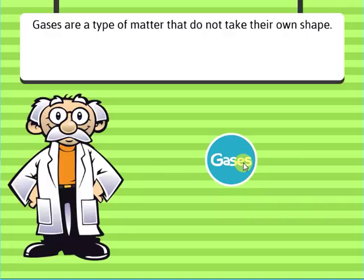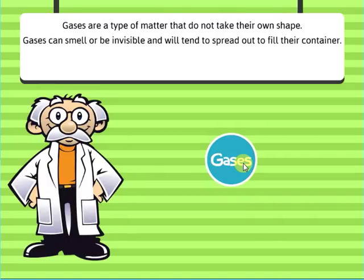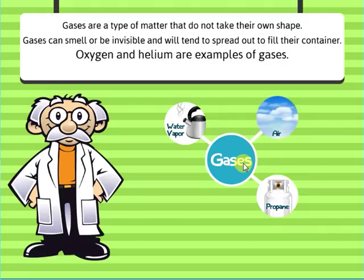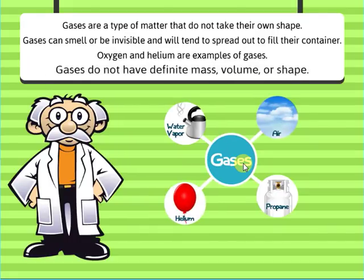Gases are a type of matter that do not take their own shape. Gases can smell or be invisible, and will tend to spread out to fill their container. Oxygen and helium are examples of gases. Gases do not have definite mass, volume, or shape.